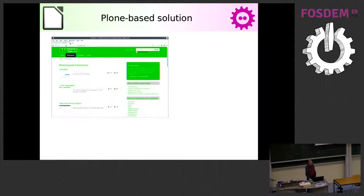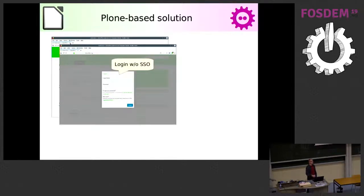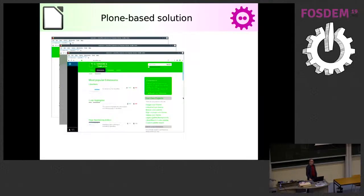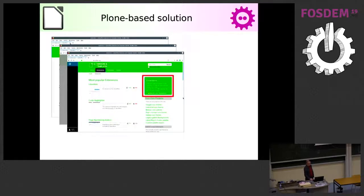Plone is our CMS for the extension site. It starts with this page, and when you click on log in you get a dialog which is not SSO compatible, so you need a different account. After logging in you face this site, which has just a dark sidebar, which is a little bit weird. How do you continue? It is here — there is 'upload a new extension.'